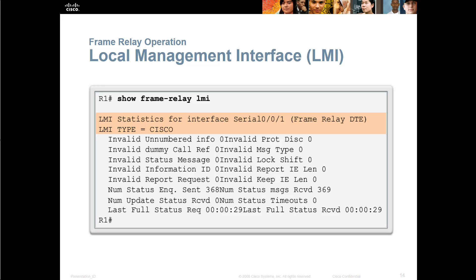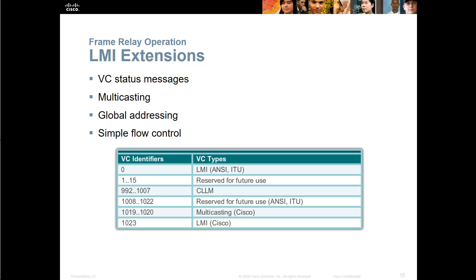LMI has several extensions. The different types of extensions are going to be the status messages, multicast, global addressing, and simple flow control. Here are the appropriate identifiers and the VC types that define those status messages.